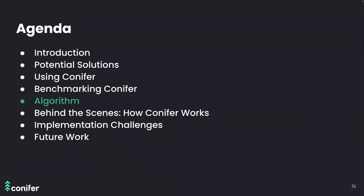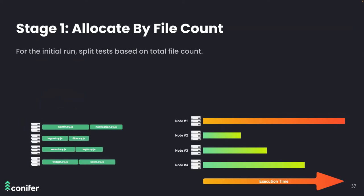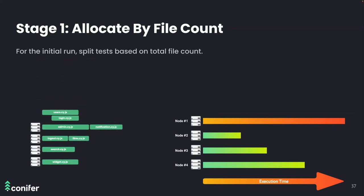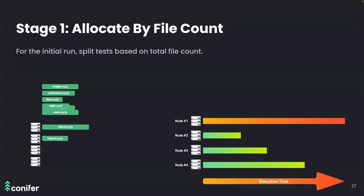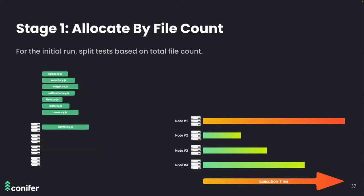Now let's explore how Conifer achieves these results by looking at the test splitting algorithm. Conifer allocates test files to parallel nodes using a two-stage algorithm. The first stage is used in the initial test run: Conifer naively distributes test files to nodes based on total file count, such that each node contains roughly the same number of tests. For example, with eight test files parallelized over four nodes, the algorithm goes through each test one by one and adds it to the node with the smallest number of test files.